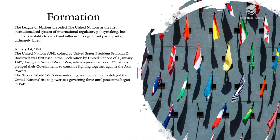First of all, let's see how the United Nations were formed. The League of Nations preceded the United Nations as the first institutionalized system of international regulatory policymaking, but due to its inability to direct and influence its significant participants, it ultimately failed. On January 1st 1942, the term 'UN', coined by President Franklin Roosevelt, was first used in the Declaration of United Nations.